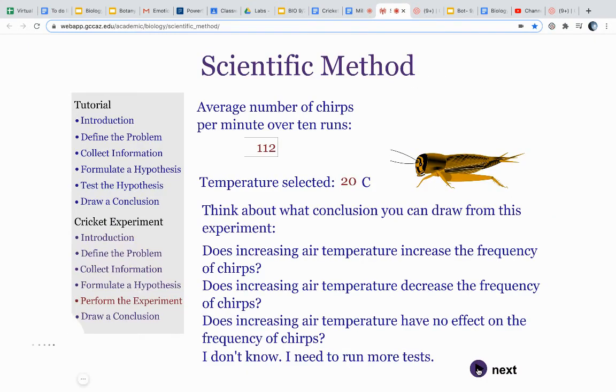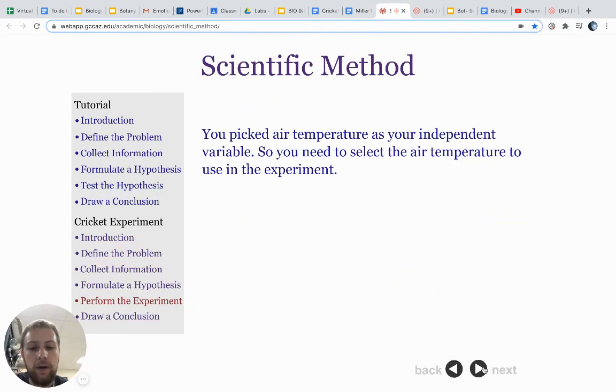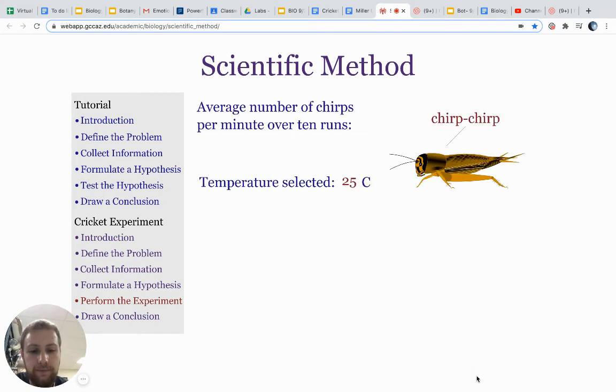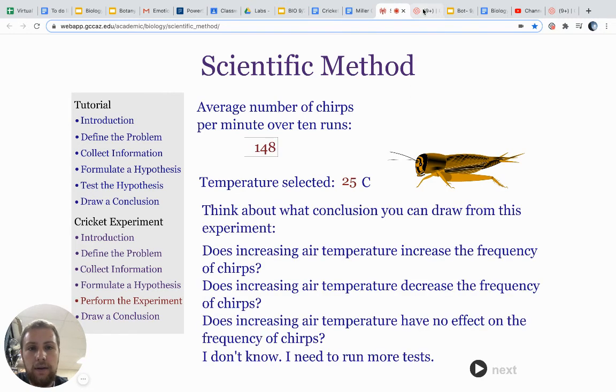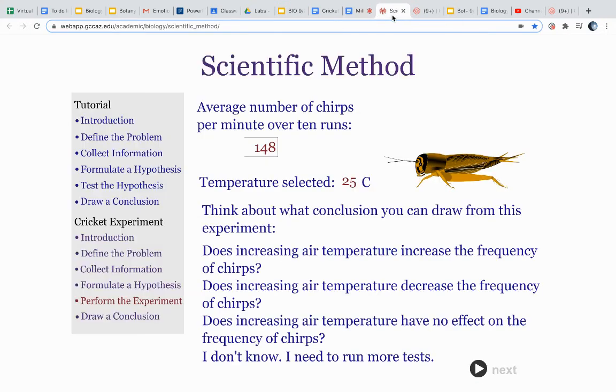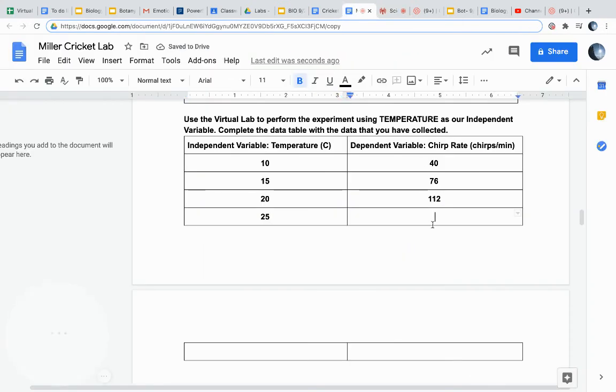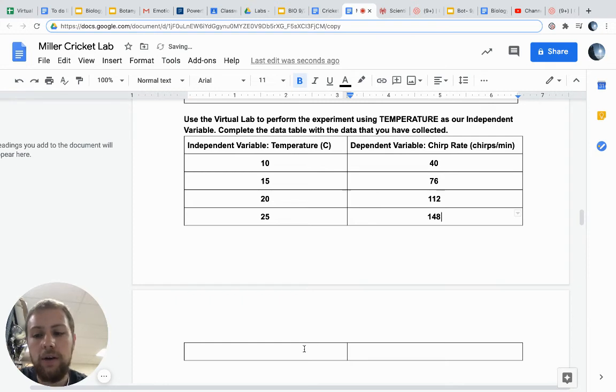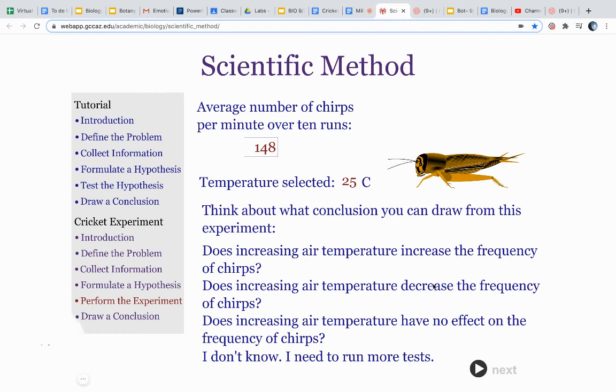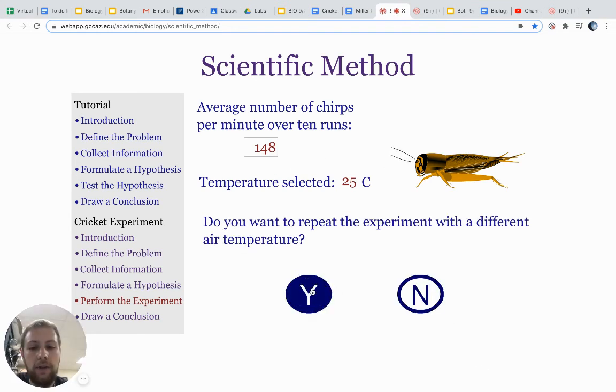And then if we do another one, so we want to do two more, let's try 25 degrees. That was 25, and I looked a little bit too quick. 148 chirps per minute. That, remember, was our standard temperature that was measured at the beginning of this experiment. So we're now at our standard, and let's try to go up to 30.